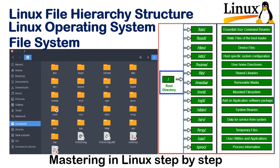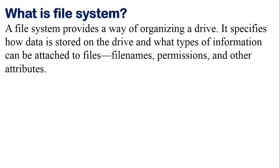Later on, this will help you with installation, troubleshooting, and dealing with problems. First of all, you should understand what a file system actually is and why we need to learn about it. A file system provides a way of organizing a drive — it helps the operating system organize a drive. It specifies how data is stored on a drive and what type of information can be attached to files: file names, permissions, and other attributes.